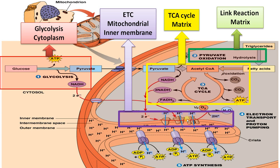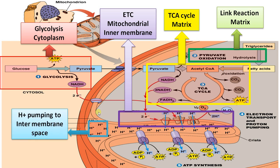During this journey through the protein complexes, the energy is used to pump H⁺ ions from the matrix to the intermembrane space — that is, the space between the outer mitochondrial membrane and the inner mitochondrial membrane. So proton pumping occurs from the matrix to the intermembrane space.